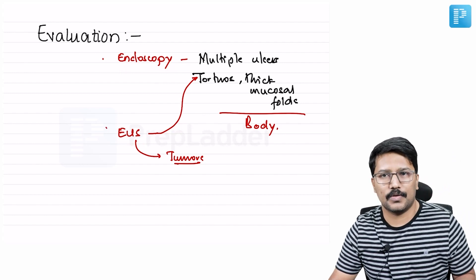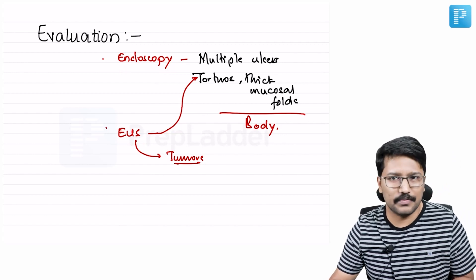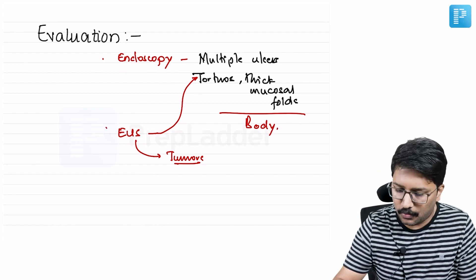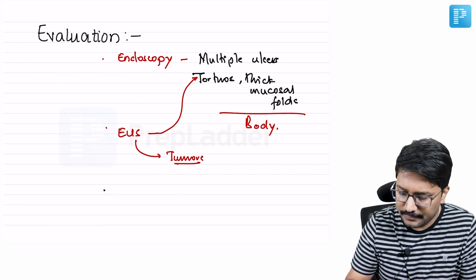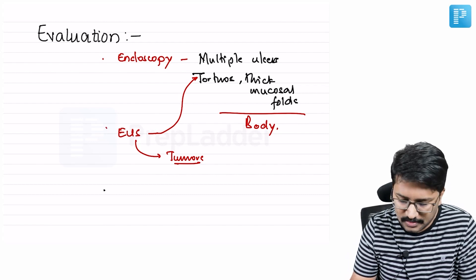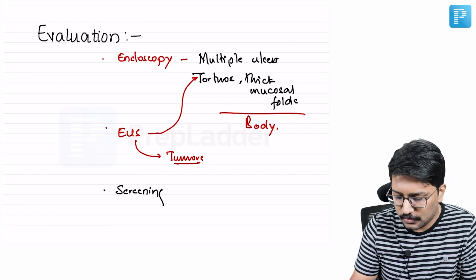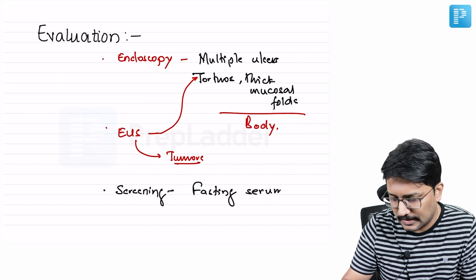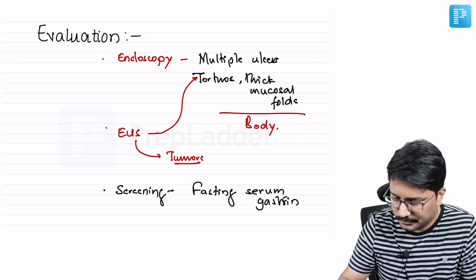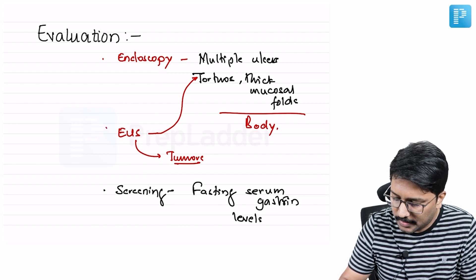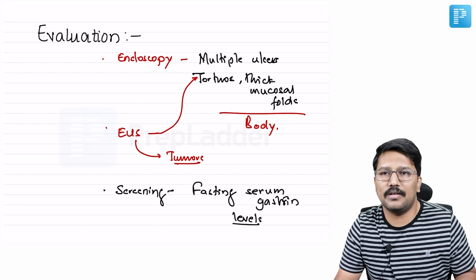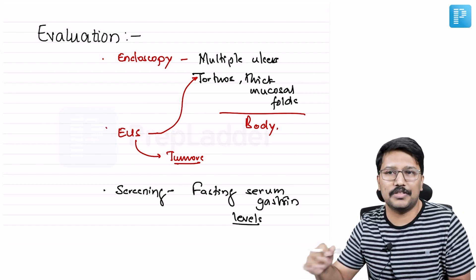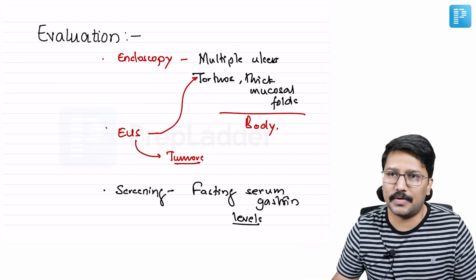These are all potential clues, but we are not concluding a diagnosis of Zollinger-Ellison syndrome from these alone. For confirmation, we have to follow a very methodical approach. The initial investigation of choice for screening is fasting serum gastrin levels. It is also recommended that this be coupled with gastric pH measurement, mainly to differentiate from other conditions where serum gastrin levels may be elevated.